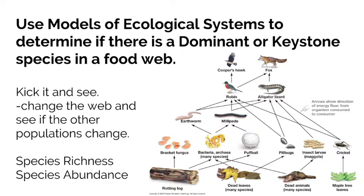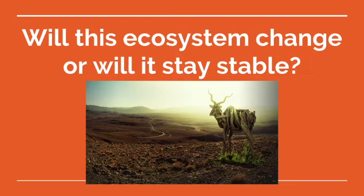Scientists use models of ecological systems, like a food web, to determine if there is a dominant or keystone species. They do experiments where they will go in and remove one species and see what happens. They'll measure the change in other populations to see what impact the removed species had. They measure species richness and species abundance after removing one single organism to see how stable that food web is or if it might change. With the impact that humans have on many ecosystems, that question is very important — will this ecosystem change or will it stay stable if we remove one of these organisms, if one of them accidentally goes extinct? That's all for now; if you have any questions, write them down and I will see you in class.